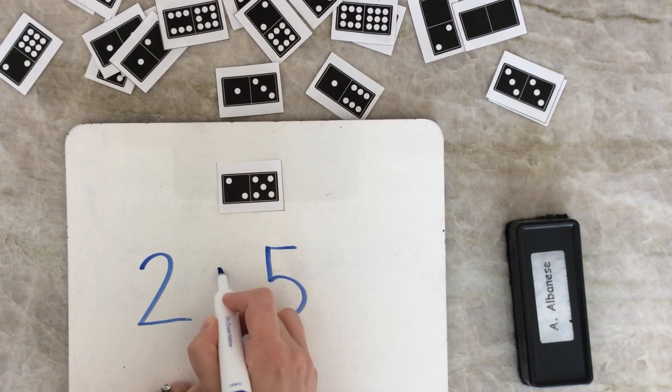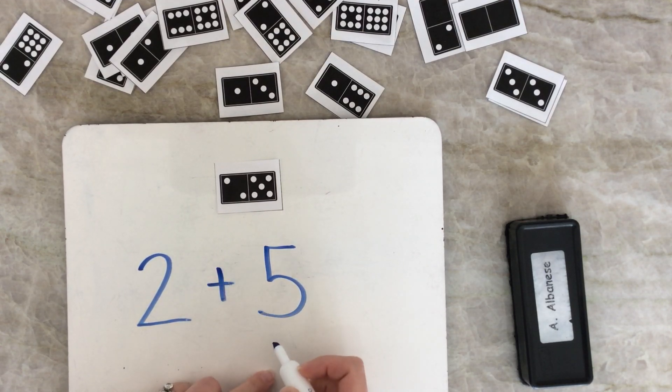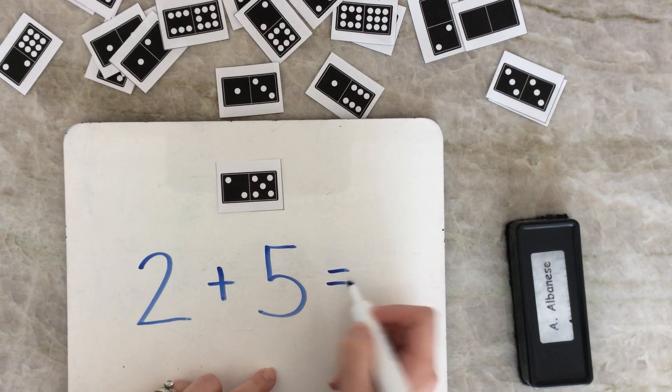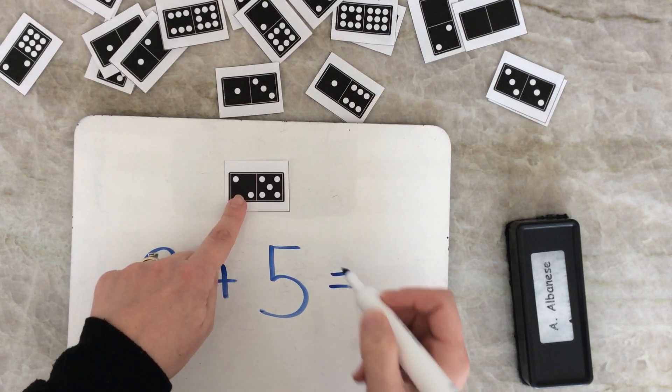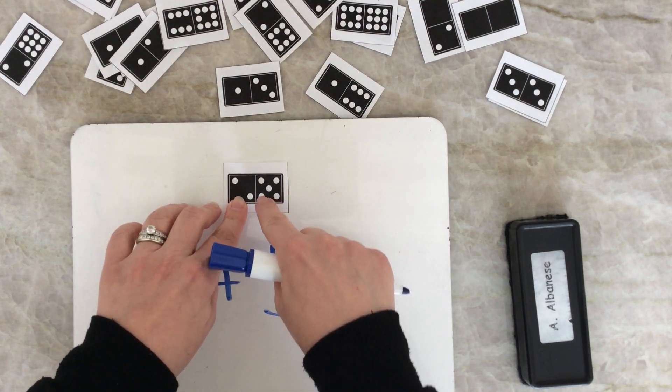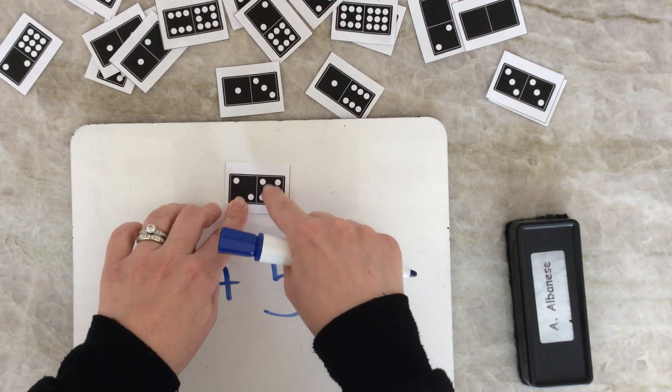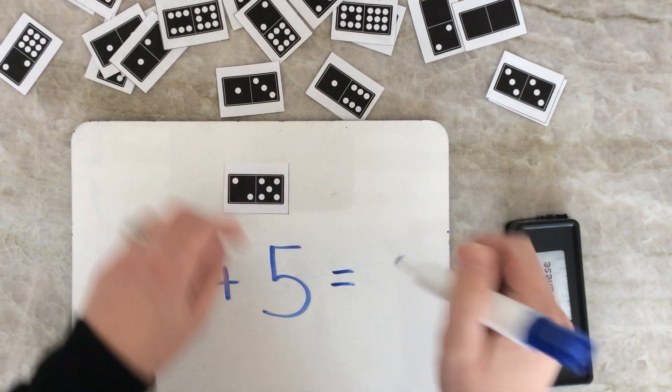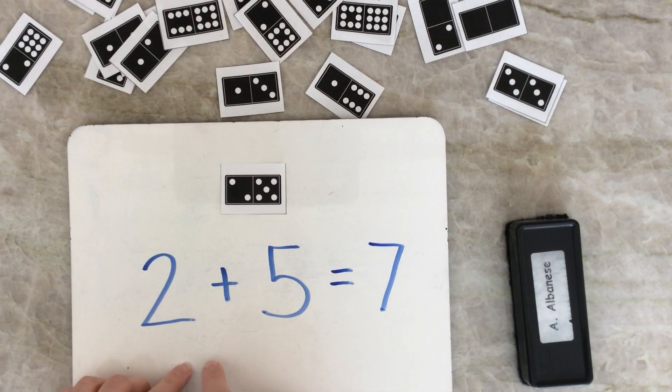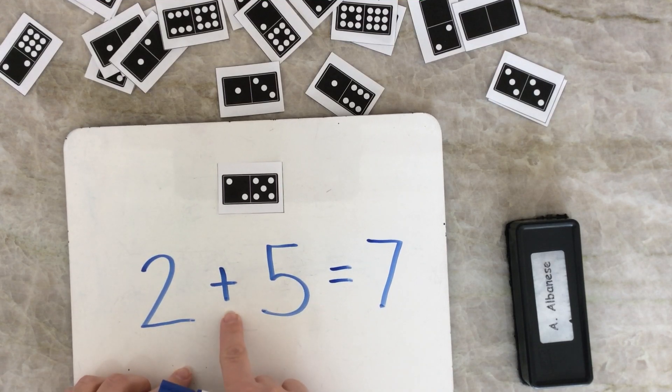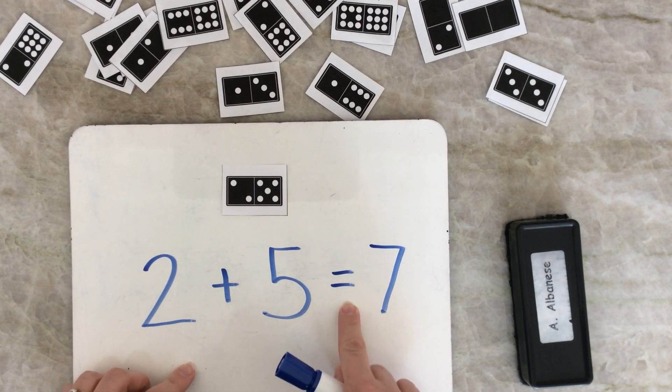Let's put our addition sign in the middle, and let's write our equal sign here at the end. Now let's see if we can solve it. 2. Keep counting. 3, 4, 5, 6, 7. Can you help me read our addition sentence? 2 plus 5 equals 7.